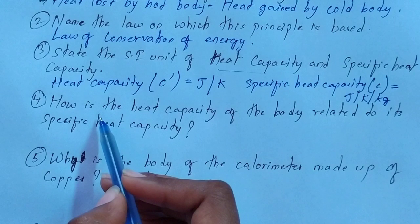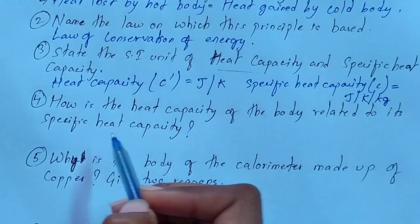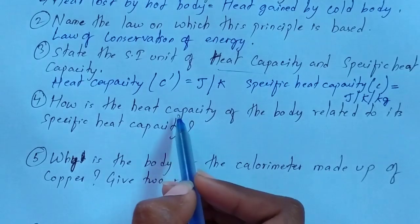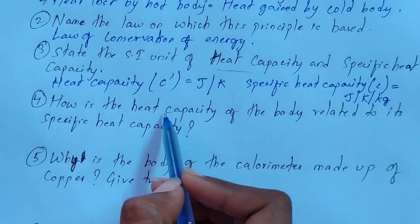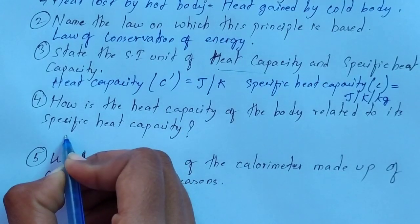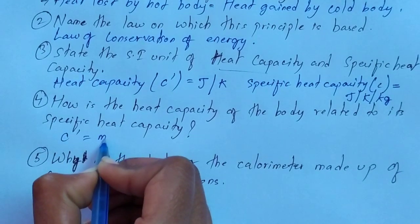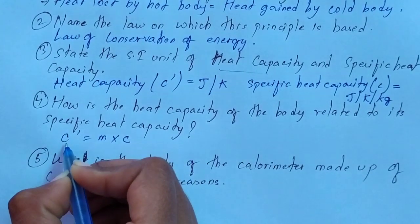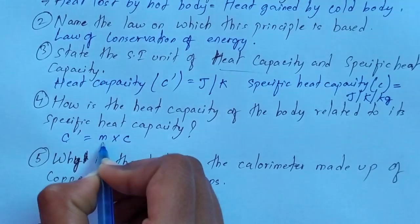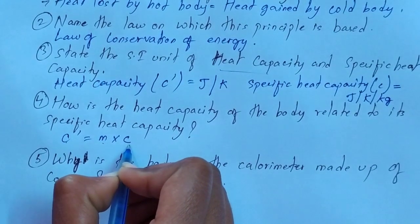Question number 4: how is the heat capacity of a body related to its specific heat capacity? You need to give the relation between heat capacity and specific heat capacity. The relation is C dash equals M into C, that is, heat capacity equals mass multiplied by specific heat capacity.